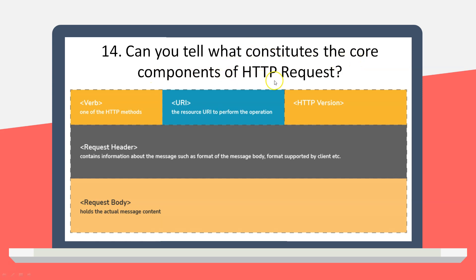Next question: what constitutes the core components of an HTTP request? To perform HTTP operations (GET, PUT, POST, DELETE), the format includes: the HTTP method/verb (e.g., POST), the endpoint URI (e.g., http://localhost:8080/students), the HTTP version (1.0, 1.1), the request header (accept type, content format), and the request body containing the actual data (e.g., id, first name, last name, email in JSON or XML format).